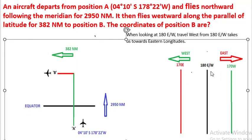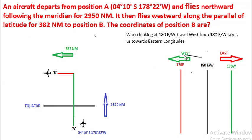Now look at this position. You will understand when we are facing 180 degrees east-west, that is the anti-meridian or anti-prime meridian. When we travel westward, we are actually going towards the western longitudes.